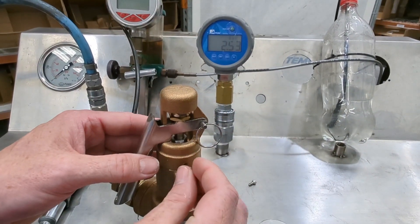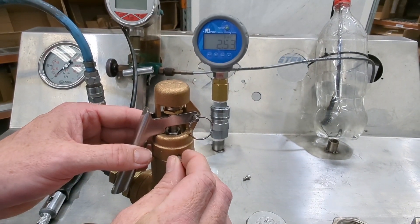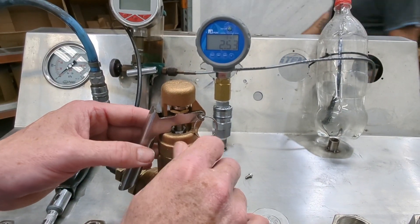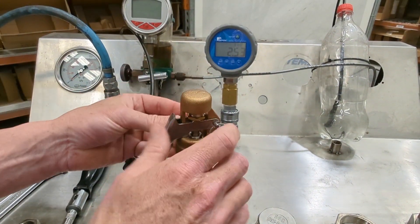Then put these two retaining screws back in. This will lock the top of the pressure relief valve in the position that you want it to be in.